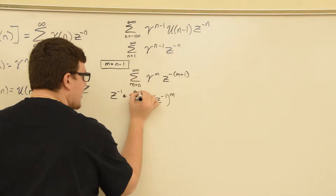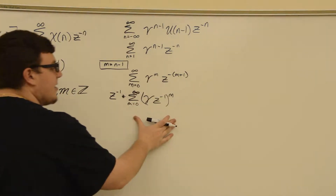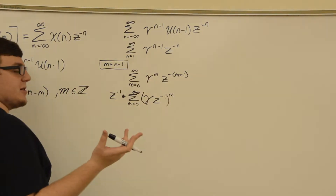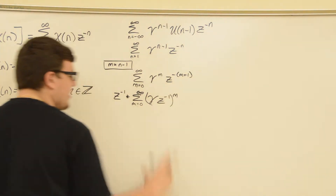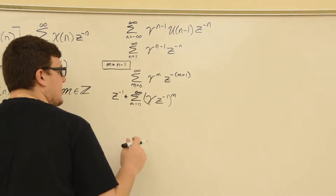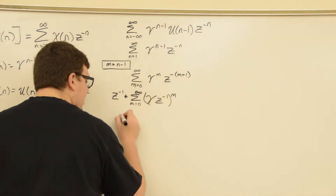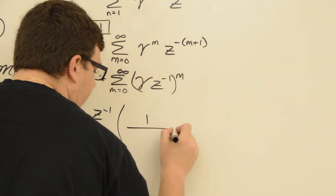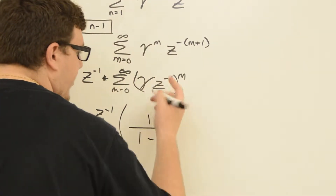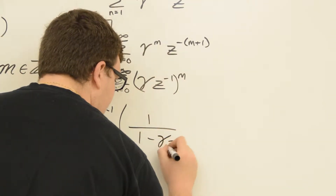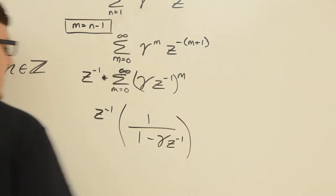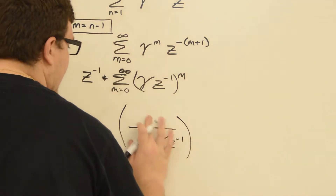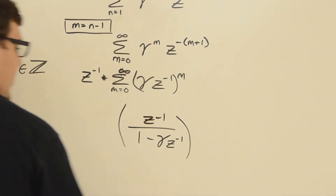Now we have a geometric series. This gamma Z inverse is just some number, so we can apply our formula. We get Z inverse times 1 over 1 minus gamma Z inverse, where the common ratio is gamma Z inverse. We can pull the Z inverse in here and we're good.